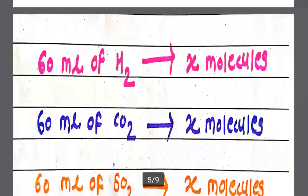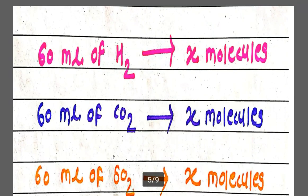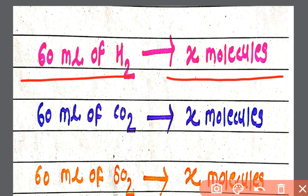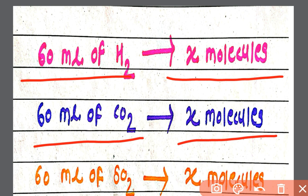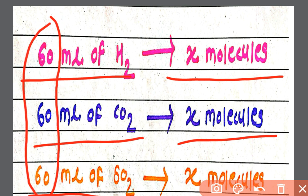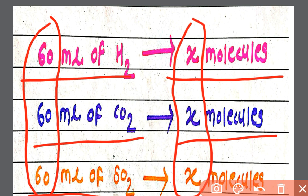This is Avogadro's Law. If 60 ml of H2 gives X number of molecules, then 60 ml of CO2 will give — yes — X number of molecules, because equal volumes contain equal number of molecules. 60 ml of CO2 will also contain X number of molecules. Because in these 3 cases, volume is the same — that is, 60 ml — therefore the number of molecules from these 3 cases is also the same.